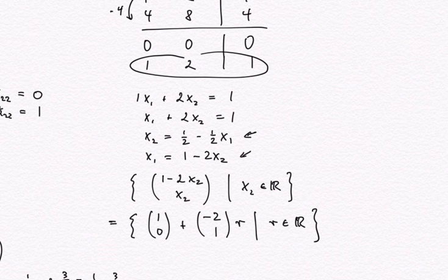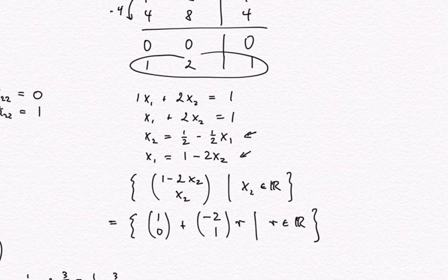This makes intuitive sense: we have two variables but only one equation imposing restrictions, so there will be infinitely many solutions in this case. Okay, let's stop here. Thanks for watching.